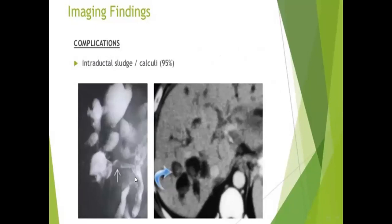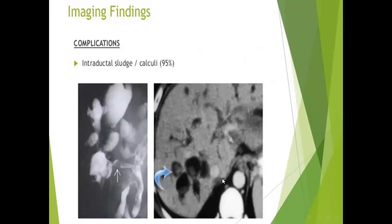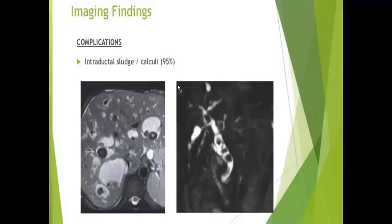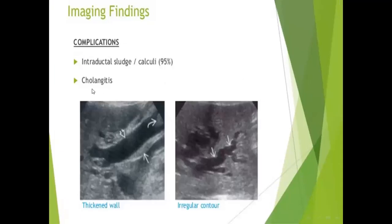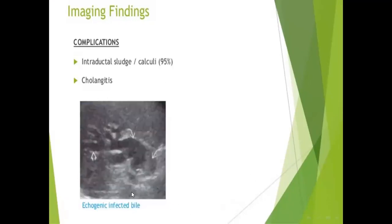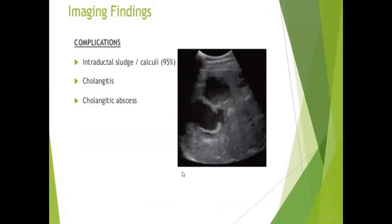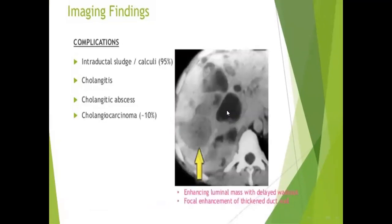On MRCP and CT, intraductal stones are visible, as seen in our case with stone formation in the dilated biliary tree. Other complications include cholangitis — seen as thickening and irregularity of the bile duct wall, infected heterogeneous bile, and cholangitic abscess formation. The most important complication is cholangiocarcinoma, occurring in about 10% of cases, seen as an enhancing mass with delayed washout.